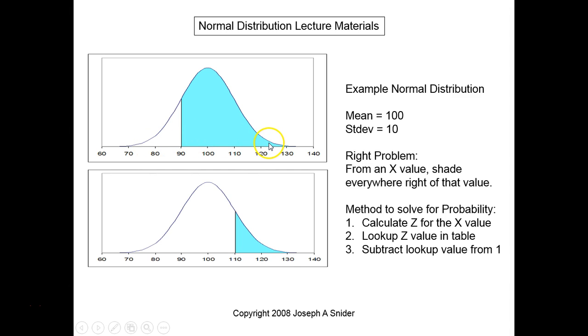So again, if 100 percent is shading everything under this curve, and you take away, subtract the lookup value which is everything to the left right here, then you're going to end up with everything to the right.